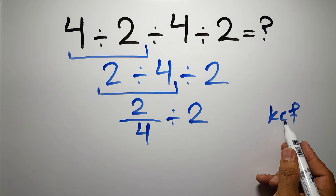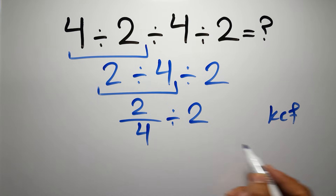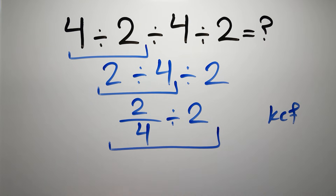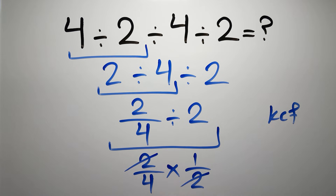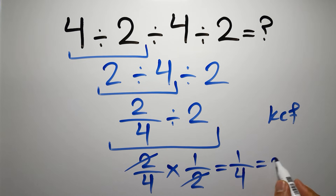K stands for Keep, C stands for Change, and F stands for Flip. We keep the first fraction, change division to multiplication, and flip the second fraction. So we have 2 over 4 times 1 over 2. We can easily cancel these two and these two, giving us just 1 over 4, or 0.25.